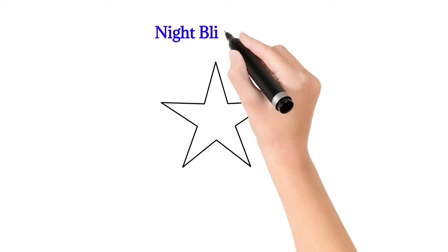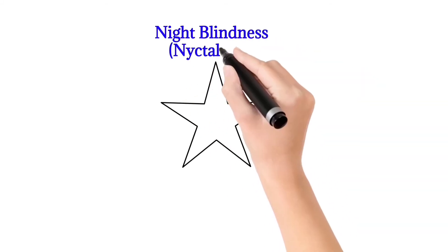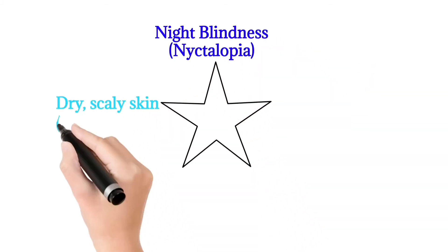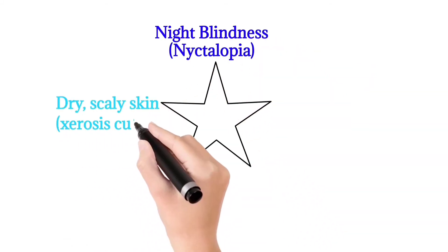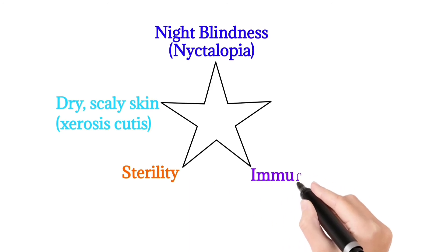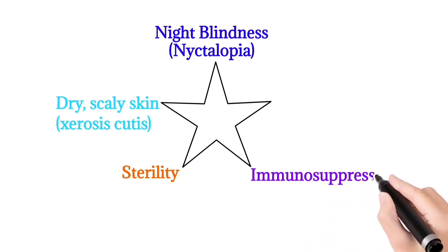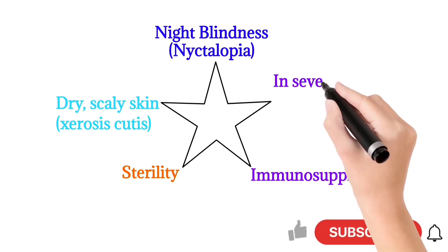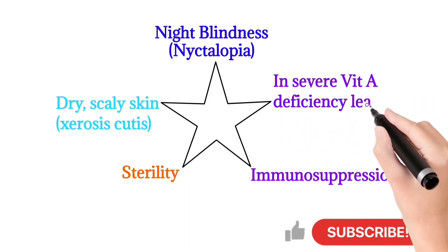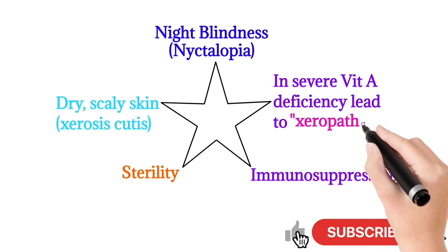Pathological conditions related to Vitamin A deficiency include: night blindness, dry scaly skin (xerosis cutis), sterility, immunosuppression, and severe Vitamin A deficiency leads to xerophthalmia.